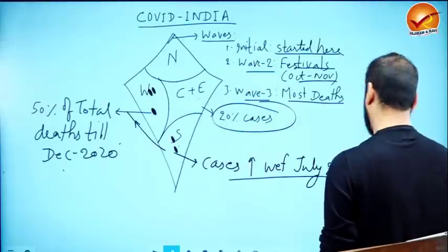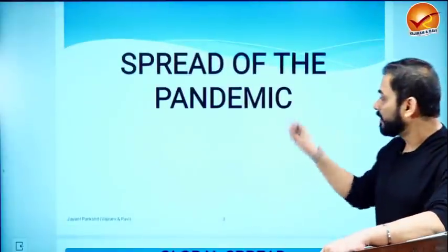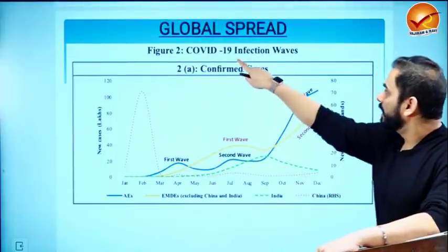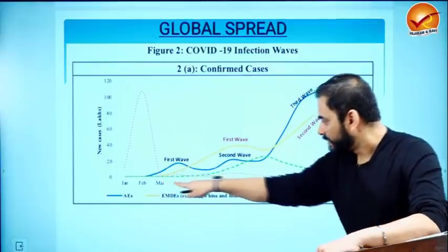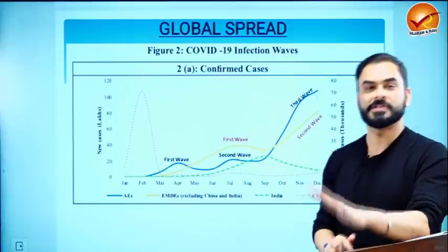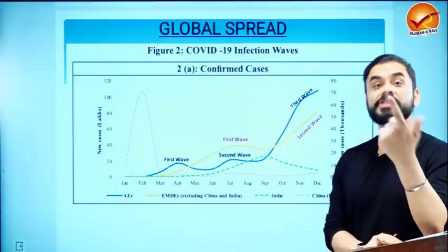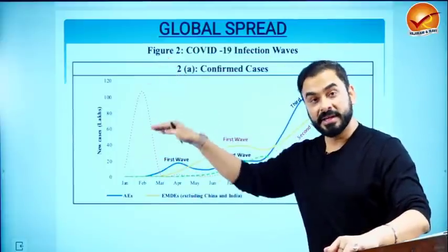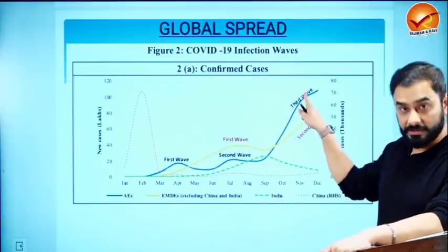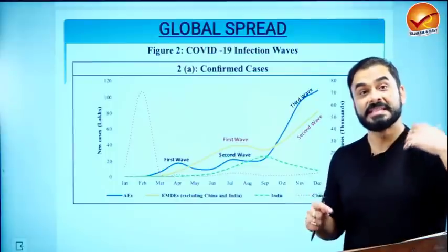Now let's look at the spread of the pandemic. In the first wave, the number of cases rose very fast. In the second wave, cases were somewhat flat because measures like lockdowns were taken. But in the third wave, wherever countries faced it, there was a very steep rise in cases.